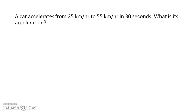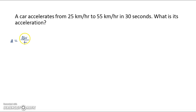A car accelerates from 5 kilometers per hour to 55 kilometers per hour in 30 seconds, and they want to know what is its acceleration. Well, don't forget that acceleration, a, is equal to the change in velocity, delta v, over t — so it's a rate. It's the change in velocity with time.